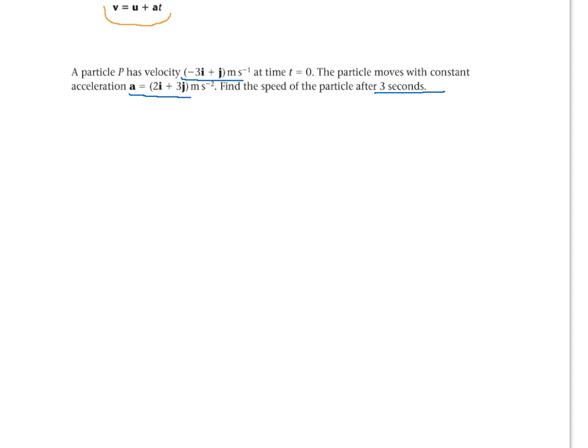So we've got our particle here at the initial time and a particle after 3 seconds. So our initial speed is minus 3i plus j. We don't know what its speed is after t equals 3 seconds. That's what we're trying to find. We know that the acceleration is 2i plus 3j.